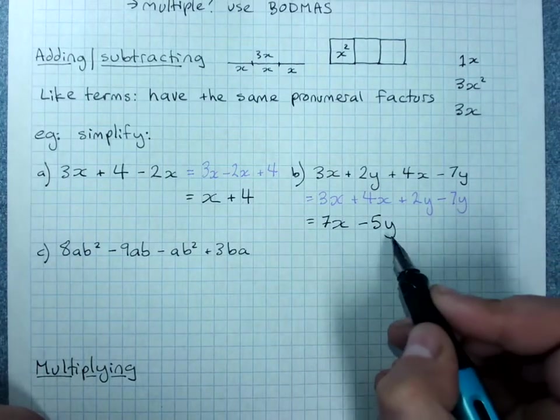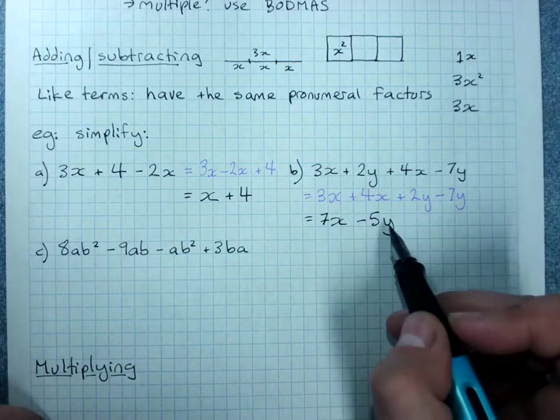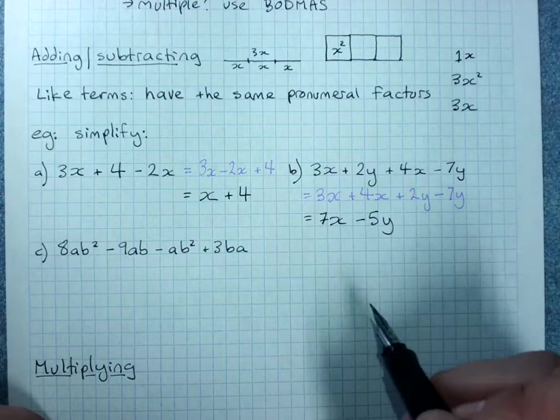Plus 2y minus 7y means minus 5y. x and y are not the same. These are x's. These are y's. We cannot put them together. This is as simple as it gets.